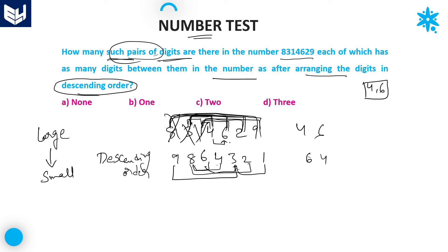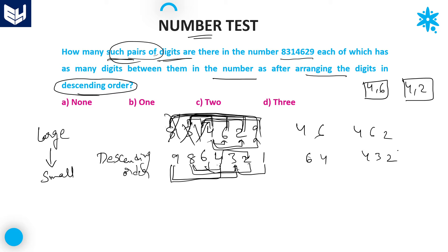Now with 4: between 4 and 6 — 0 digits here, and also 0 in descending order — that is 1 pair. Between 4 and 2 — 1 digit here, and also 1 digit in descending order — that is also 1 pair. Between 4 and 9 — 2 digits here, and also 2 digits in descending order (9 8 6 4) — therefore 4 and 9 is also 1 pair.